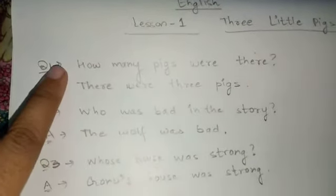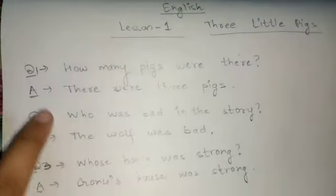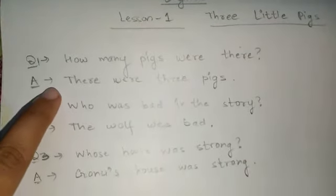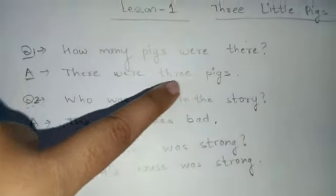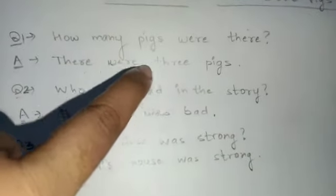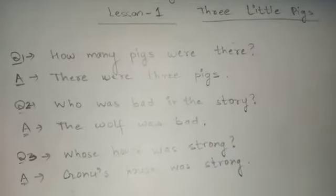The first question is: how many pigs were there? Tell me students, how many pigs were there in this story? So, the answer is, there were 3 pigs. Students, t-h-e-r-e there, w-e-r-e were, t-h-r-e-e 3, p-i-g-s pigs. There were 3 pigs, ok?